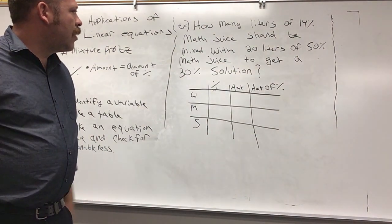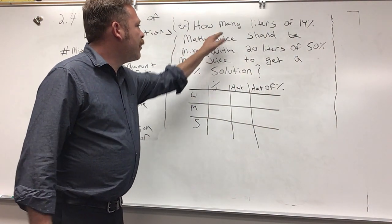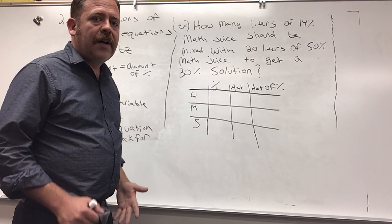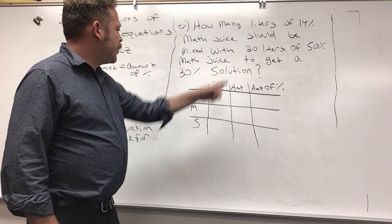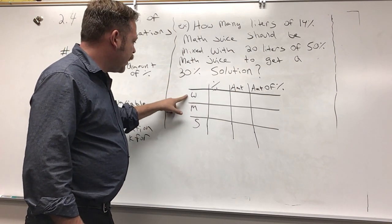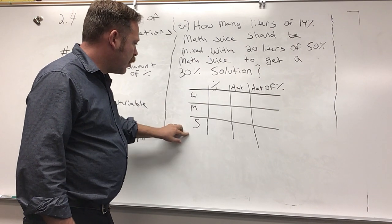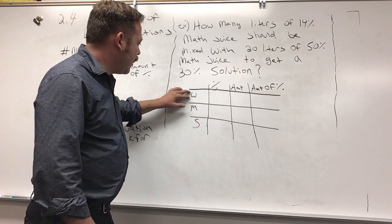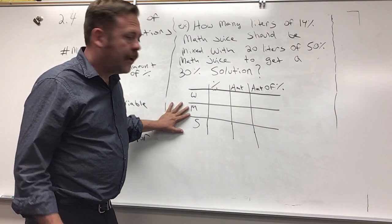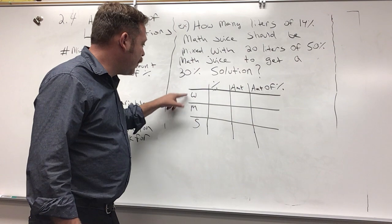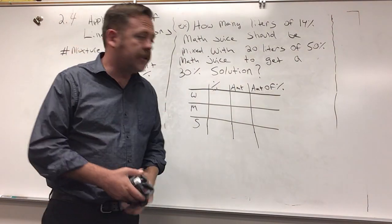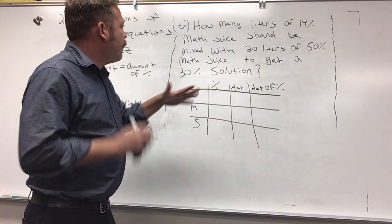What would our variable be? Remember the variable will come from the question and it says how many liters of 14% math juice. When you have a mixture problem you're adding something weak to something strong to get something in the middle, or if you're strengthening it you're adding a strong substance to a weak substance to get something in the middle.